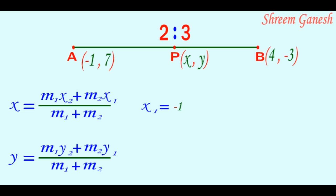Here x₁ is the x-coordinate of point A and it is equal to -1. x₂ is equal to x-coordinate of point B and it is equal to 4. y₁ is y-coordinate of point A and it is equal to 7. y₂ is the y-coordinate of point B and it is equal to -3. m₁ is equal to 2 and m₂ is equal to 3.